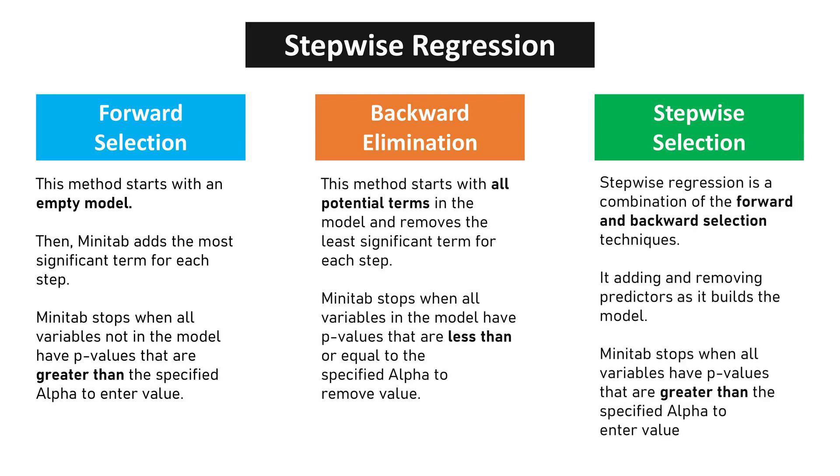Stepwise Selection combines forward and backward methods, offering a balanced approach to model building that adapts as analysis progresses, adding and removing predictors as it builds the model. Minitab stops when all variables have p-values that are greater than the specified alpha to enter value.